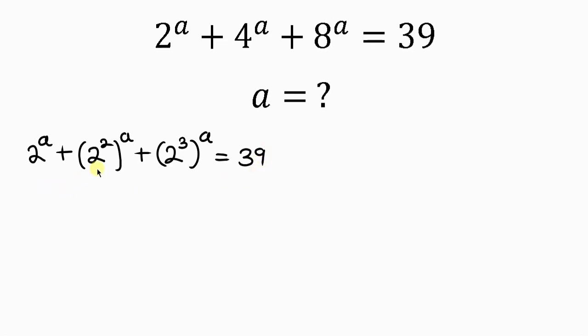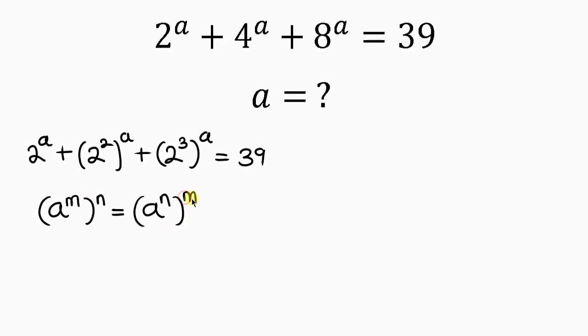Our next step will be to apply the property of indices that says when I have a to the m, and this is raised to the n, this can be written as a to the n raised to the m. Notice that the position of m and n switch. We're going to be applying this trick to what we have here.